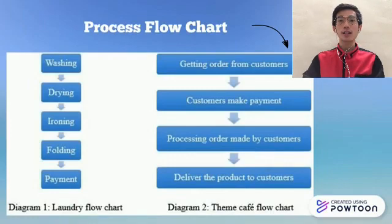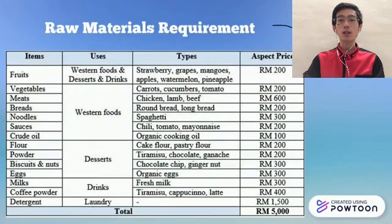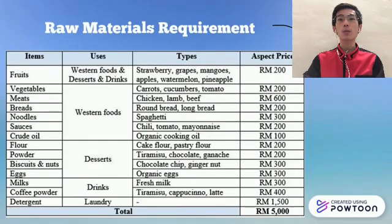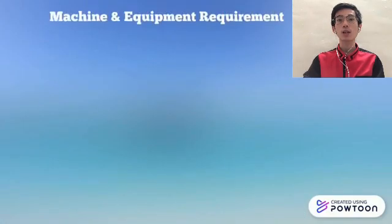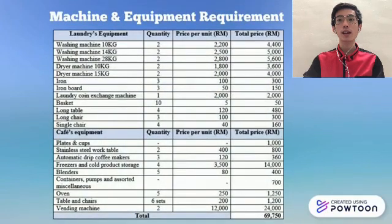We serve customers the best service step by step in order to get good feedback. The table shows the types and uses of raw materials used in our cafe and laundry. Raw materials play an important role in the production process and are also one of the costs of production.